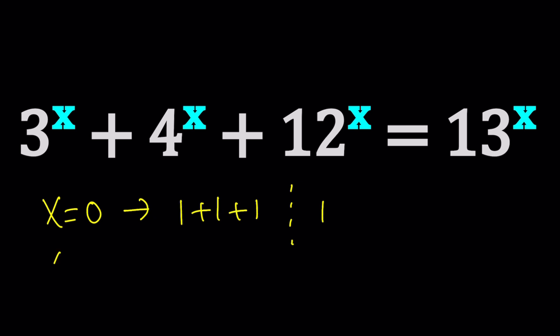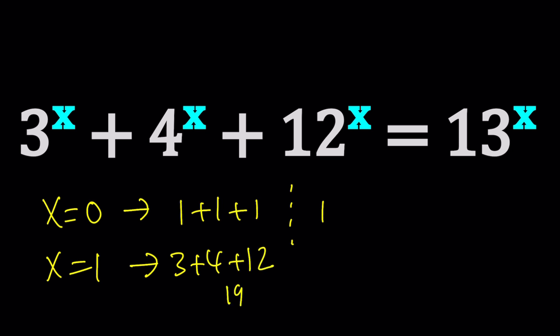What happens at x equals 1? If x is 1, we get 3 plus 4 plus 12, which gives us 19. The right-hand side is just 13. Again, the left-hand side is bigger, but they're getting closer.